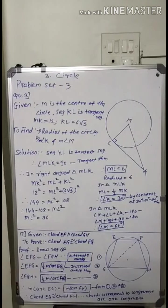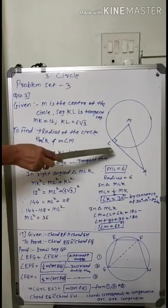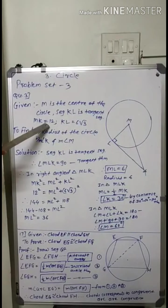Q3: In the figure, m is the center of the circle and segment kl is tangent segment. Length mk equal to 12 and length kl equal to 6 root 3. Find the radius of the circle and measure of angle k and m. Given m is the center of the circle, segment kl is its tangent, mk equal to 12 and kl equal to 6 root 3. To find radius of the circle and measure angle k as well as measure angle m.